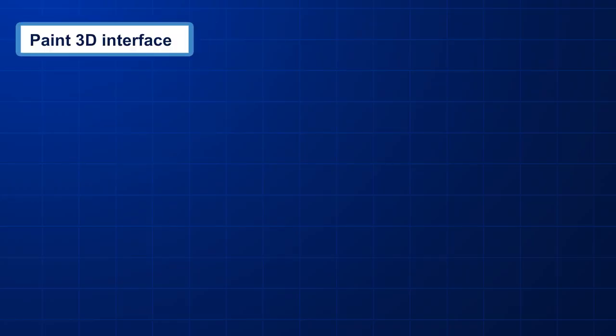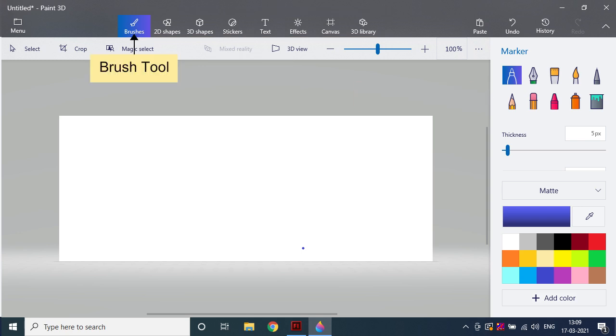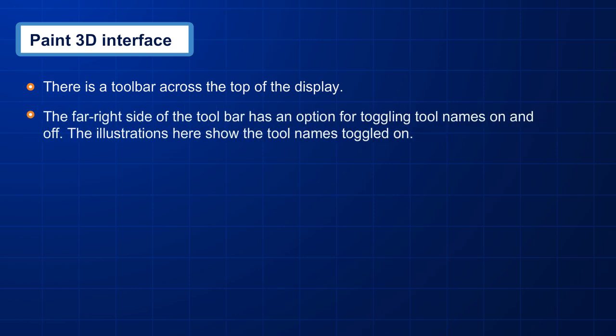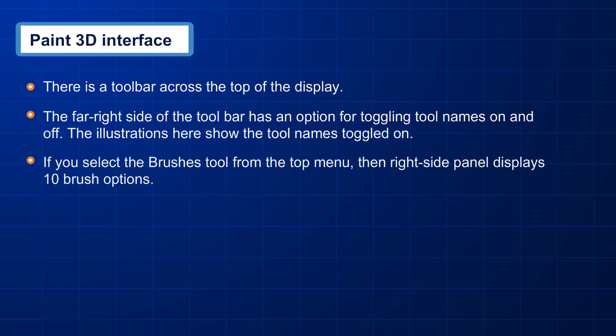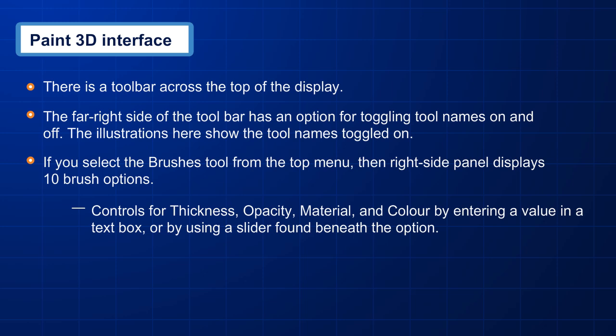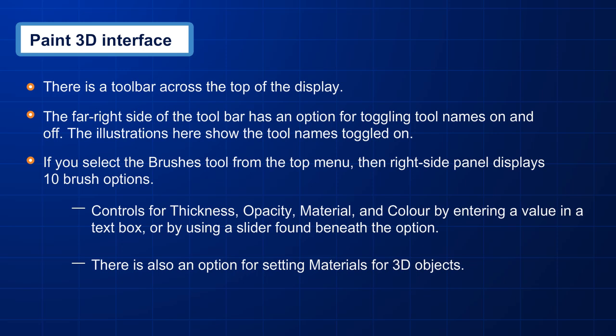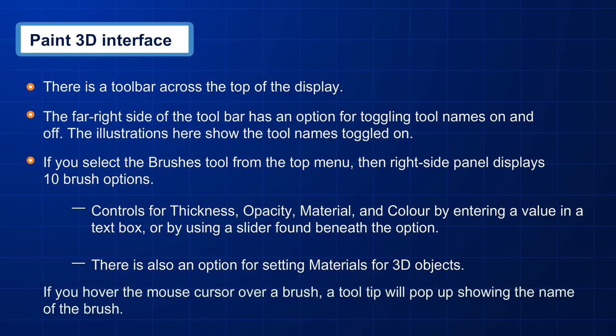The Paint 3D interface includes a toolbar, brush options, brush tools, menu button, and canvas. There is a toolbar across the top of the display, with an option on the far right for toggling tool names on and off. If you select the brushes tool from the top menu, the right side panel displays 10 brush options with controls for thickness, opacity, material, and color. There is also an option for setting materials for 3D objects. Hovering the mouse cursor over a brush will show a tooltip with the brush name.